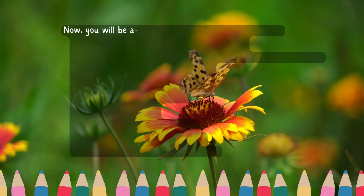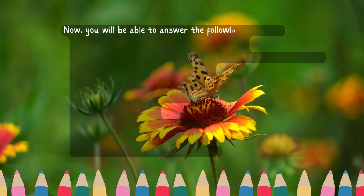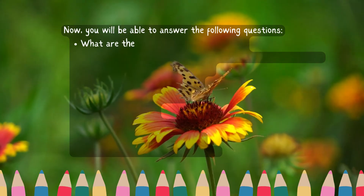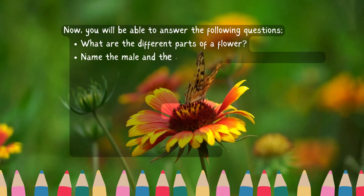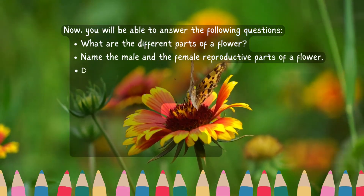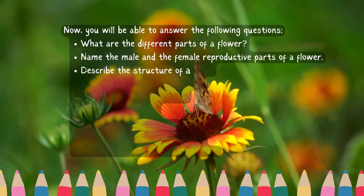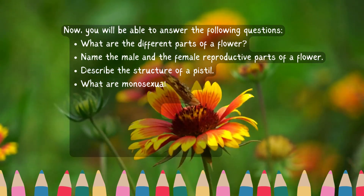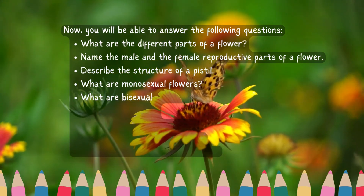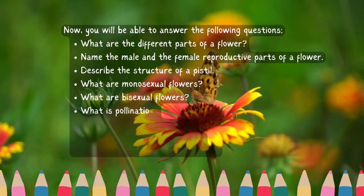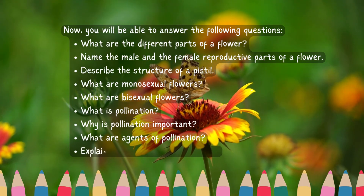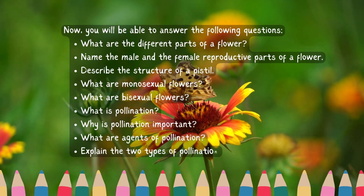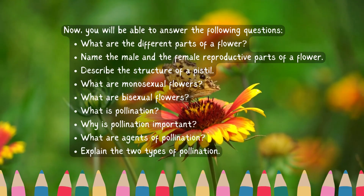So, here we finish our chapter. Now, you will be able to answer the following questions: What are the different parts of a flower? Name the male and the female reproductive parts of a flower. Describe the structure of a pistil. What are monosexual flowers? What are bisexual flowers? What is pollination? Why is pollination important? What are agents of pollination? Explain the two types of pollination.